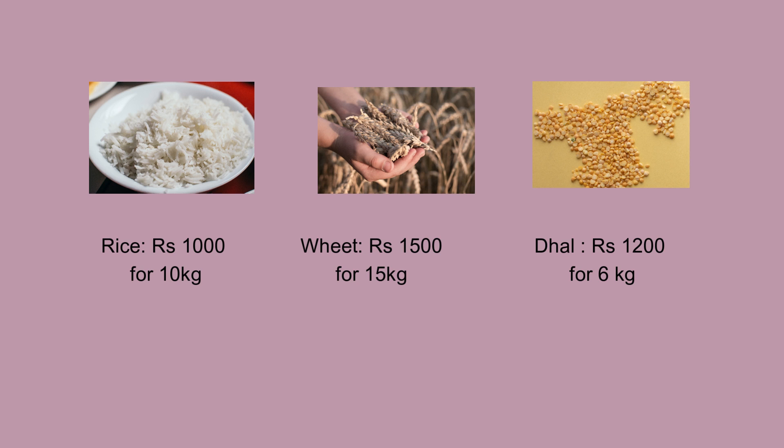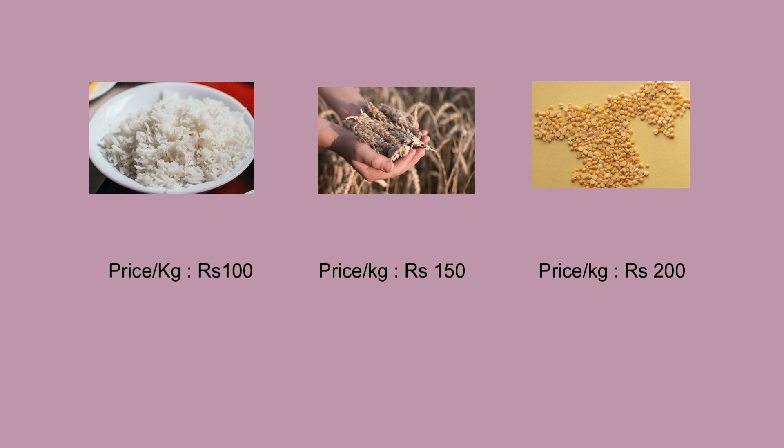Think of it like shopping in a supermarket for rice, wheat, or dal. It's difficult to compare total prices since the quantity you get is different for each item. But if you look at the price per kilogram, you can easily compare which is expensive and what value of nutrients you get for the money you pay. Multiples work in a similar way — they allow us to compare the price of a stock to its underlying fundamentals.